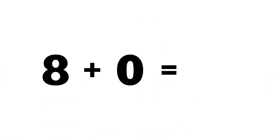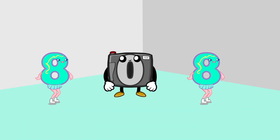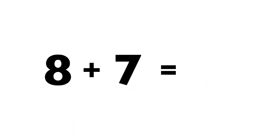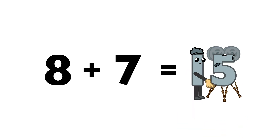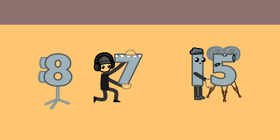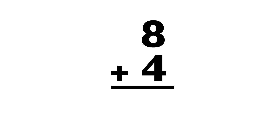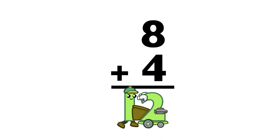Eight plus zero equals... Eight. Eight plus seven equals... Fifteen. Eight plus four equals... Twelve.